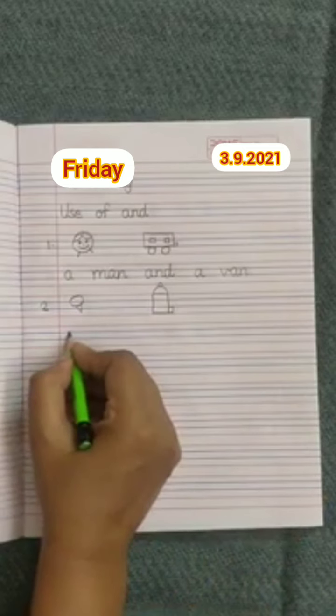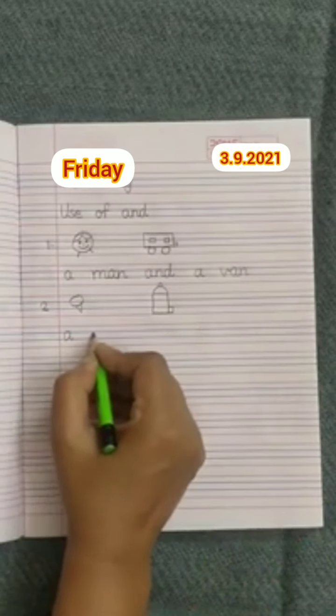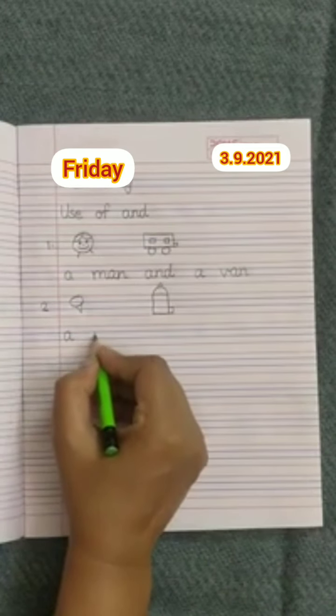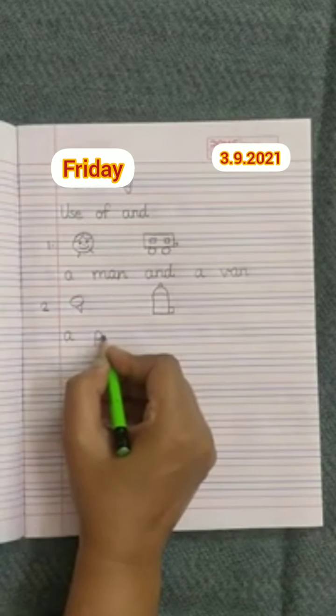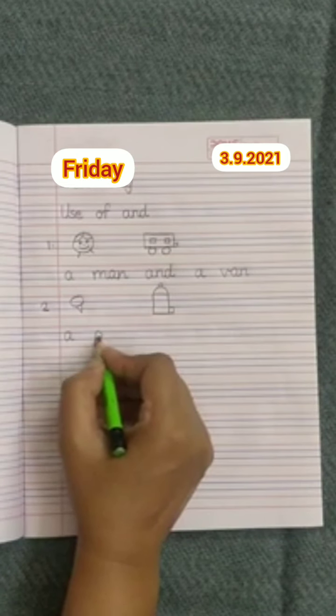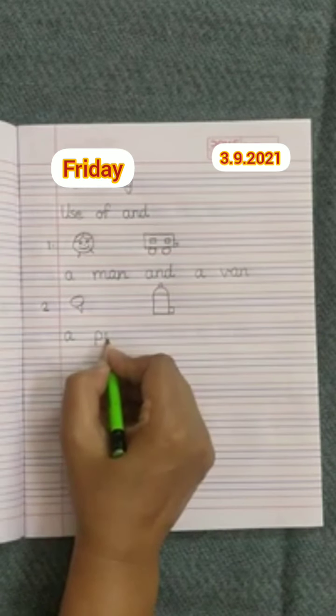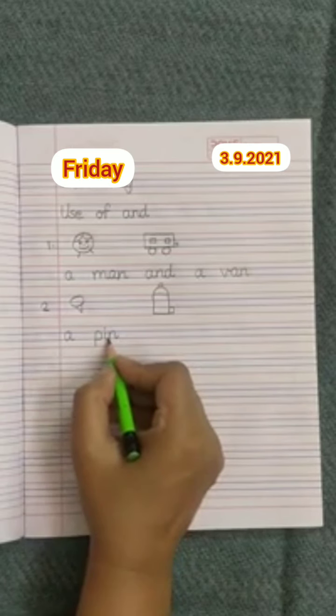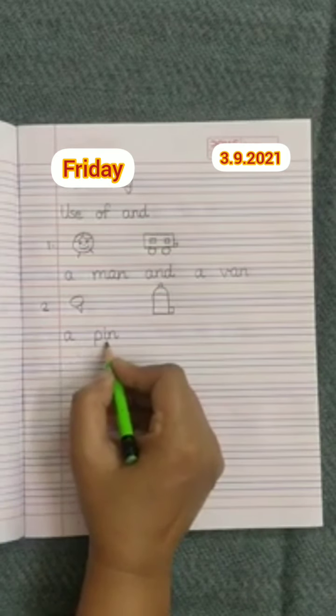So, let's write a. Leave some space and write P-I-N. Children, I will not touch with P because P has a tummy. I will touch with N. A pin.